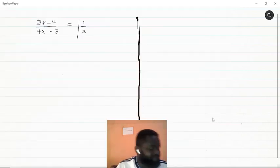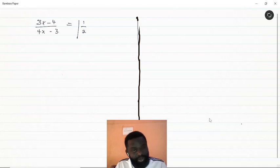Hello and welcome to Say Watch TV. We have another question on Type 4 linear equations. The problem is 3x minus 4 all over 4x minus 3 equals one and one half.